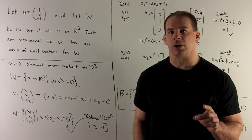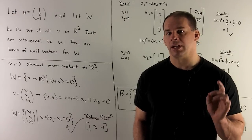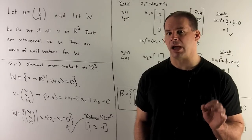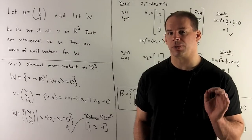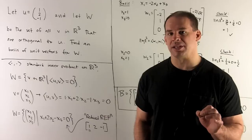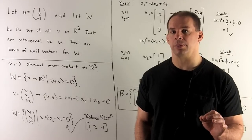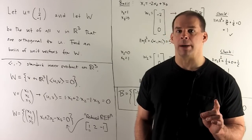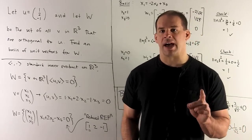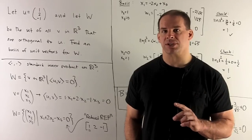Let U be the 3-vector (1, 2, -1), and let W be the subspace of R3 given by all vectors orthogonal to U. Find a basis of unit vectors for W. First, let's find W itself, and then we'll go looking for a basis.